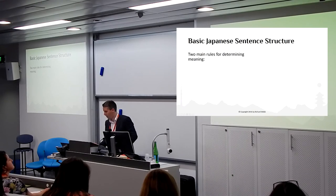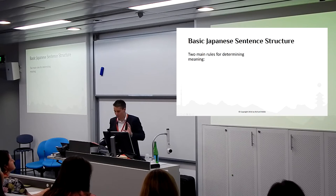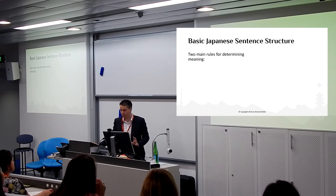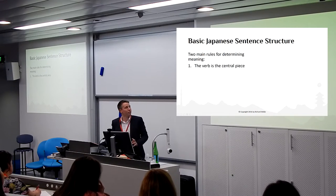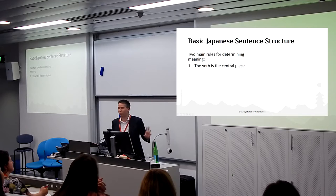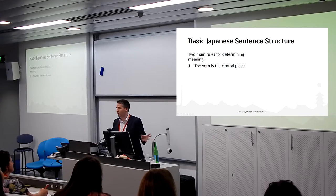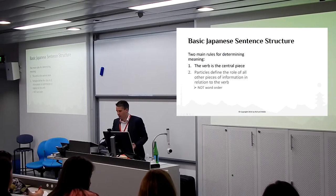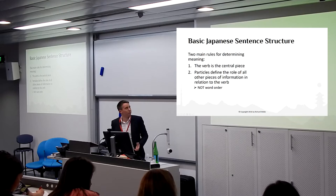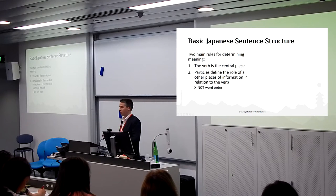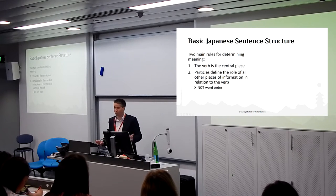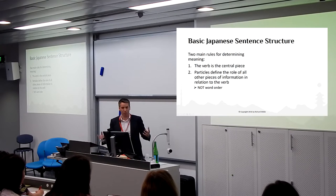I'll start with the two main rules for determining the meaning of a sentence in Japanese. The first one is the verb is the central part of the sentence — everything revolves around the verb. And then particles define the role of all the other pieces of information in relation to that verb. Not word order, as we do in English.